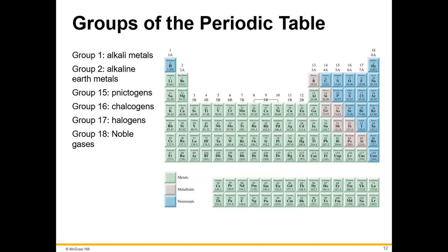Some of the groups are named. You're not going to need to memorize those names for Chemistry and Society; however, in future chemistry classes you most definitely would. For reference, here are the alkali metals, alkaline earth metals, the noble gases, and the halogens — but again, not something you need to memorize for this class.